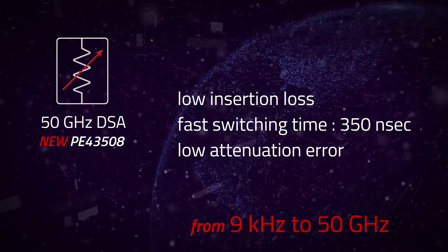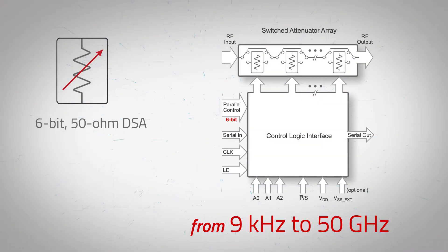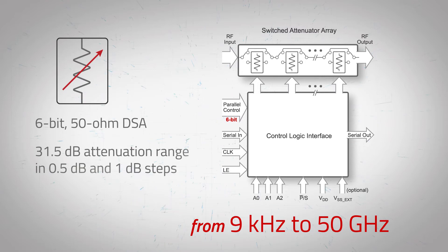The PE43508 is a 6-bit 50-ohm digital step attenuator that covers a 31.5 dB attenuation range in 0.5 and 1 dB steps.